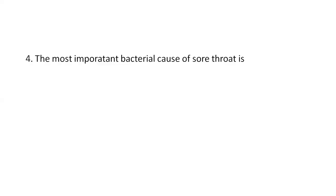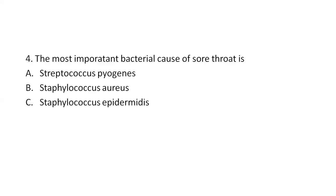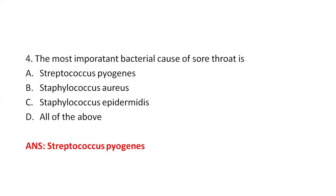Next question: The most important bacterial cause of sore throat is? Option A, Streptococcus pyogenes. Option B, Staphylococcus aureus. Option C, Staphylococcus epidermidis. Option D, all of the above. The right answer is Option A, Streptococcus pyogenes, which causes sore throat and respiratory tract infections. Staphylococcus aureus causes pyogenic pus-forming infections. Staphylococcus epidermidis is a normal flora of the skin and an opportunistic pathogen causing infections in patients with artificial heart valves.